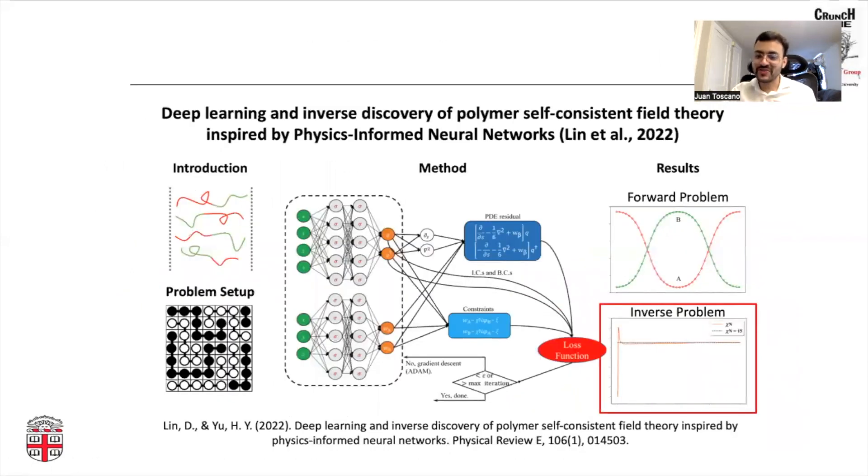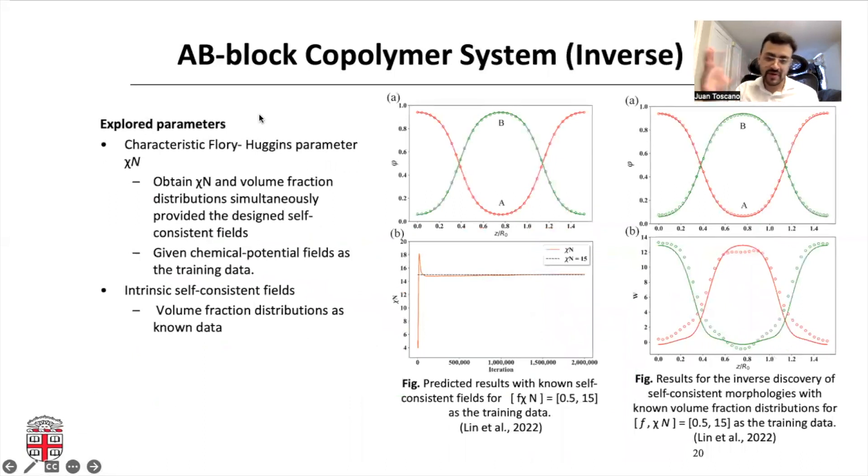For the inverse problem, once again, we are going to try scoring single parameters. There are explored parameters. The first one will be the Flory Huggins interaction parameter. They will fit some observations. You can see that as you move forward in the training, the model minimizes the loss. And as it minimizes the loss, it identifies that the right Flory Huggins parameter for this specific case is 15. The second case, they want to explore, identify, discover these six self-consistent fields. They will fit the volume fraction distributions as known data. You can see that once again, the model does a pretty decent job finding the results.